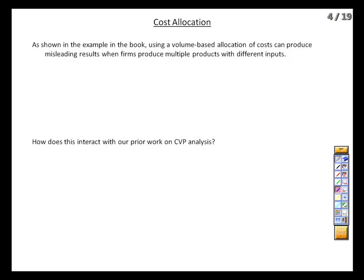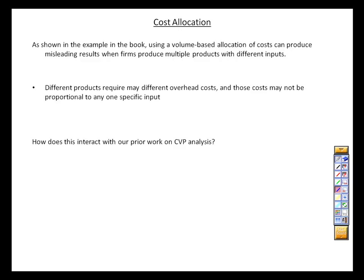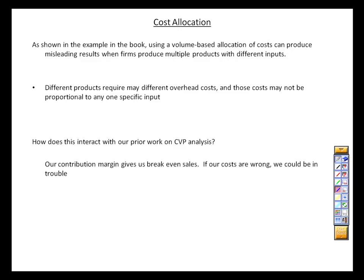Let's look at that cost allocation issue more closely. The book goes through an example showing that when you calculate overhead using a singular driver, we can have some serious distortions. The upshot is that if we produce multiple products that require different overhead costs, the allocation of those costs are not necessarily going to be proportional to any one observable input or output. And of course, that distortion can impact our planning procedures, such as cost-volume-profit analysis.